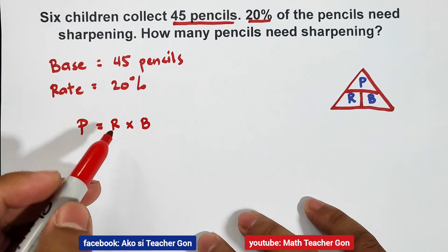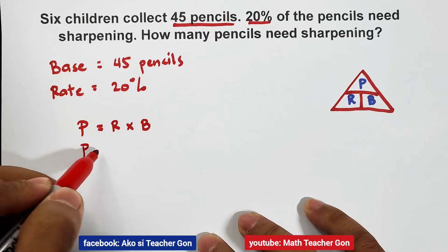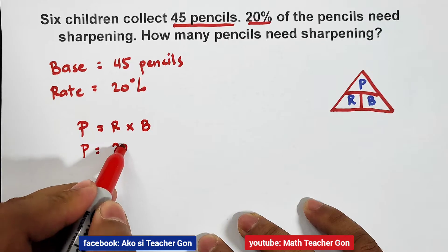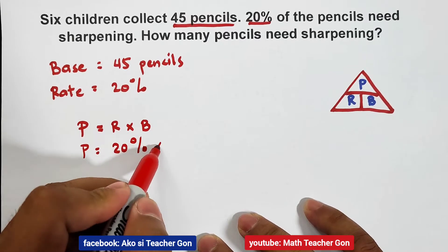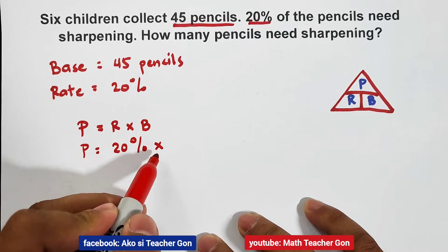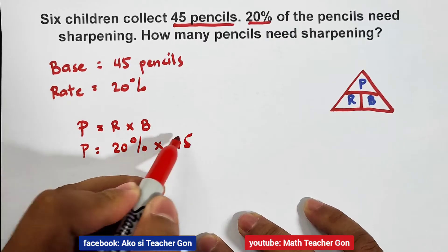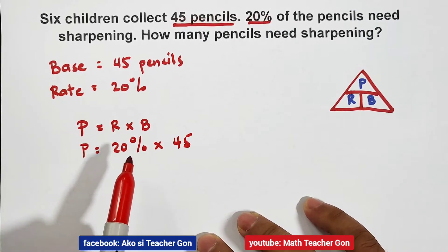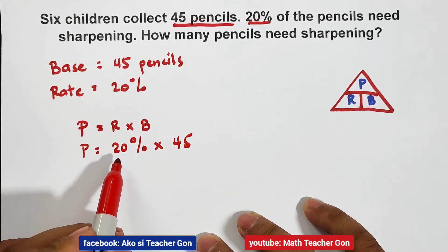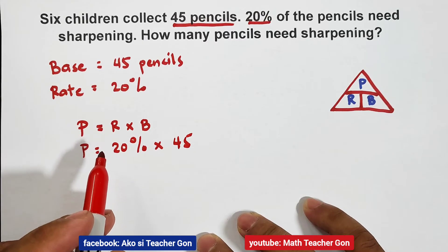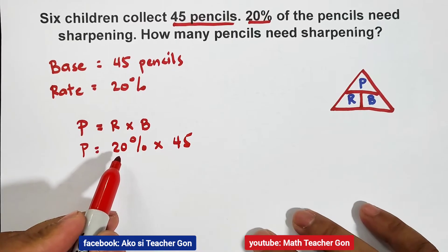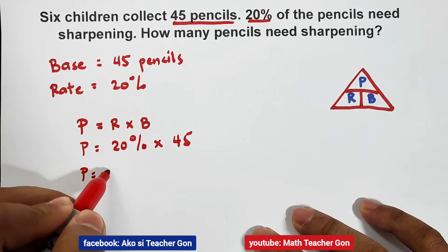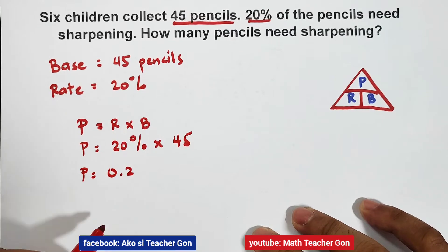So what will happen here is P equals our rate, which is 20%, times your base, which is 45. Now, you can't directly multiply 20% by 45 because this 20% rate must be converted into decimal. And the equivalent decimal value of 20% is simply 0.2.